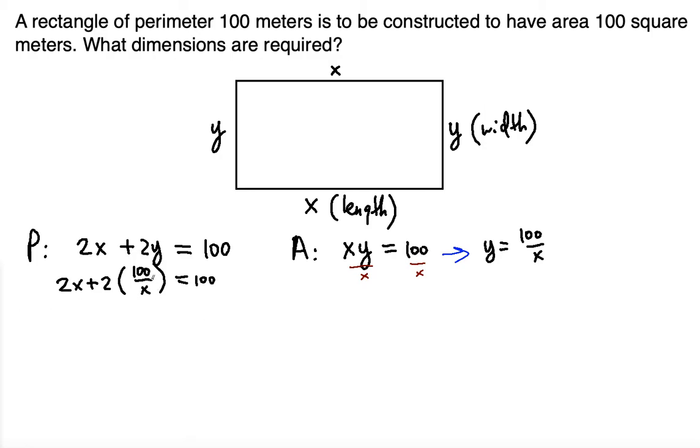Now if we multiply both sides by x, we will get rid of this fraction. So this becomes 2x squared plus, now the x with the x cancels out, so it's just 200, 2 times 100, is equal to 100 times x. So that's 100x.